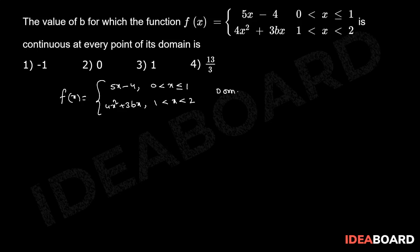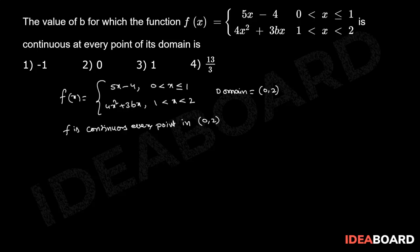The domain of the function equals the open interval (0, 2). f is continuous at every point in (0, 2). Here, x = 1 is the point of suspension, and the given function is a piecewise defined function separated at x = 1. Given f is continuous at every point in its domain, that means f is continuous at x = 1.